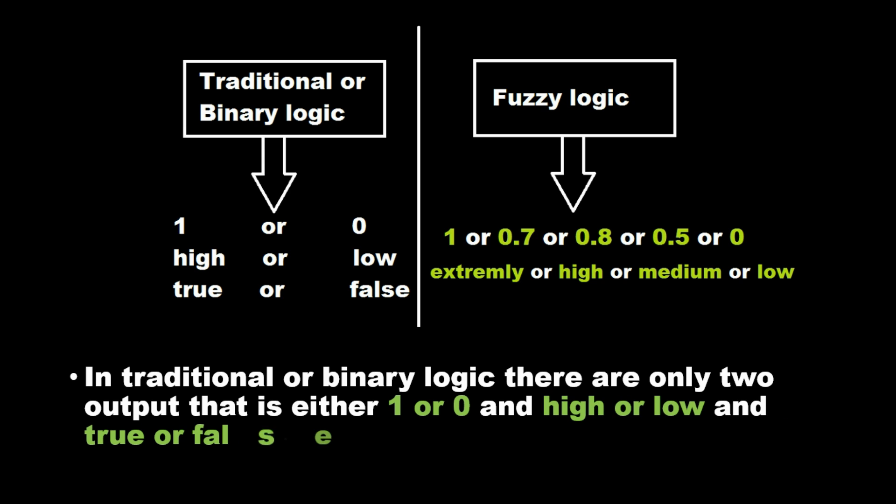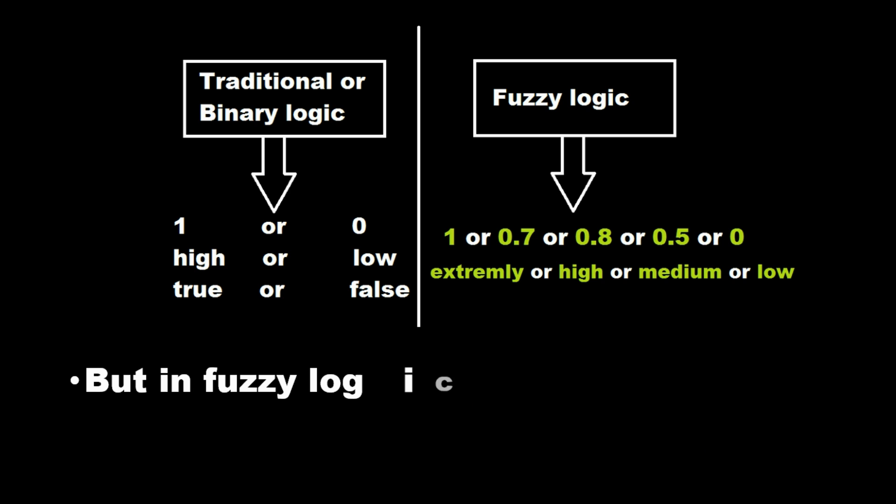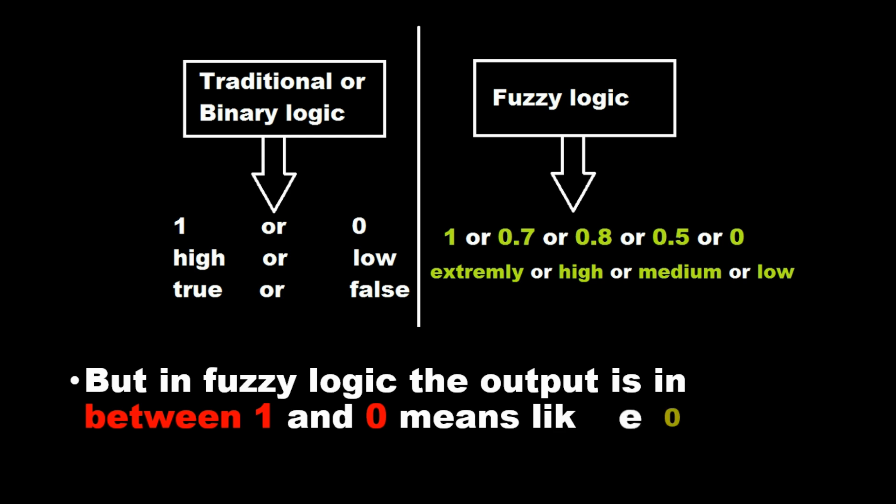Examples include true or false, up or down, and slow or fast. But in fuzzy logic the output is in between 1 and 0, meaning values like 0.1, 0.2, or 0.5.